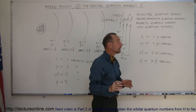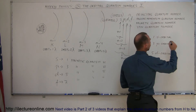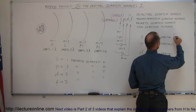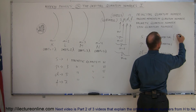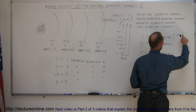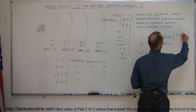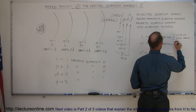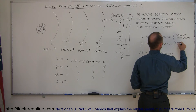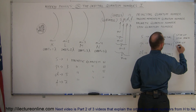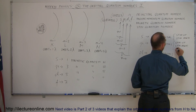Within each orbital, each orbital has two spin quantum states — it can have a spin up and a spin down. So we can have a spin up or a spin down for each orbital.